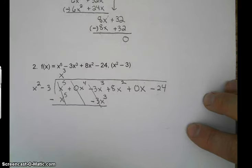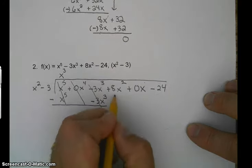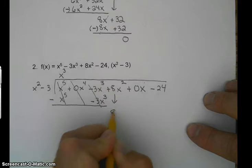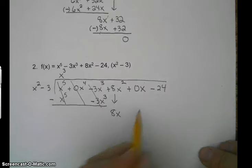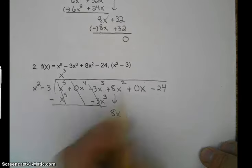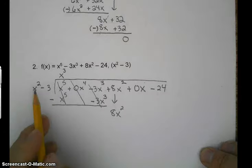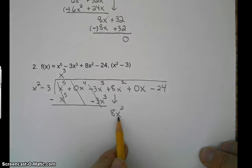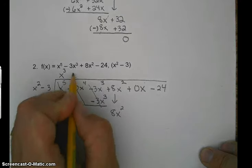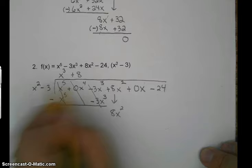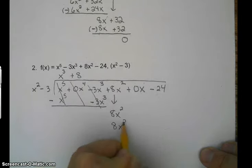So we're going to bring down the 8x squared. And since this is 0, let's just see what we get here. So x squared times what is 8x squared? Well, x squared times 8, of course. x squared times 8, 8x squared.